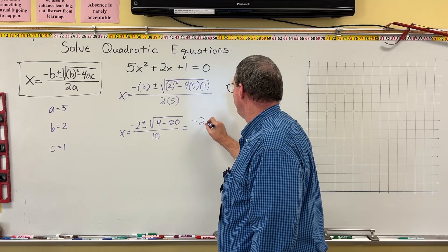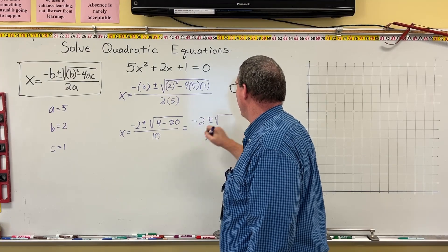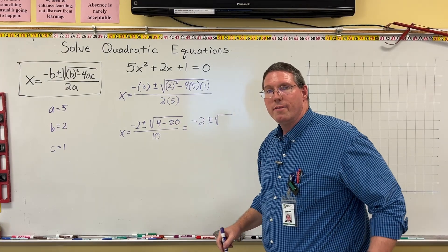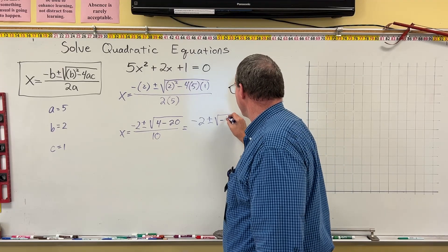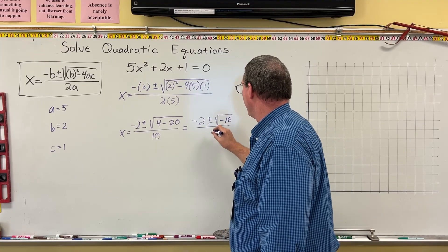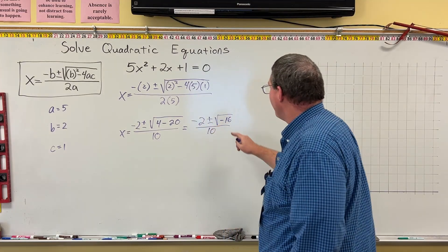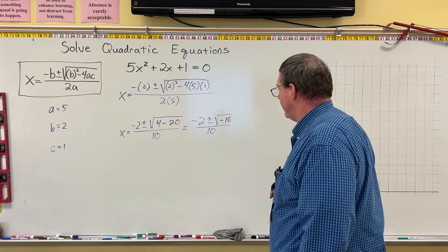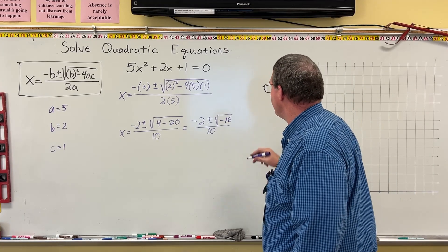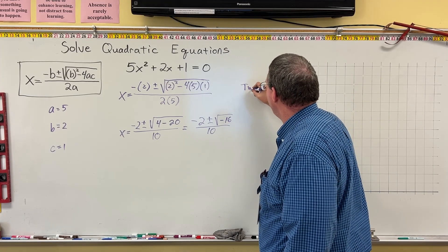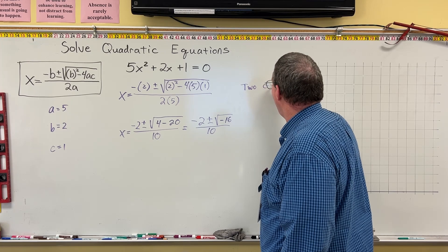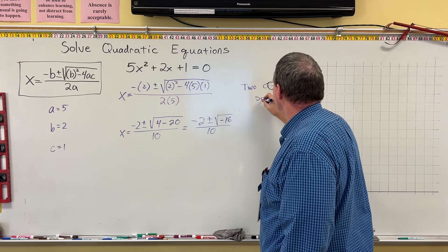So I'll bring over the negative 2, plus or minus the square root of 4 minus 20. That's negative 16. So that's negative 16 over 10. Now, we have the discriminant is now negative. And because the discriminant is negative, we can say that there are two complex solutions.